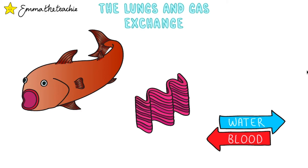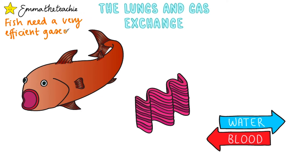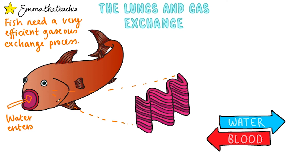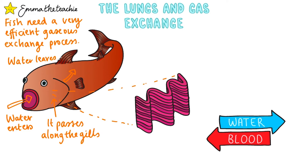Now that we've looked at gas exchange in humans, we're going to briefly look at it in fish. You may have already covered this with your teacher in topic one when learning about diffusion. Fish get their oxygen from water, which only holds very low concentrations of oxygen, so they need a really efficient gas exchange process. Water enters through the mouth of the fish and then passes over the gills which are inside the body. It then leaves by a special flap called the operculum. Gas exchange happens in the gills, and the diagram below shows you what the gills are made of — stacks of filaments that help provide adaptations.